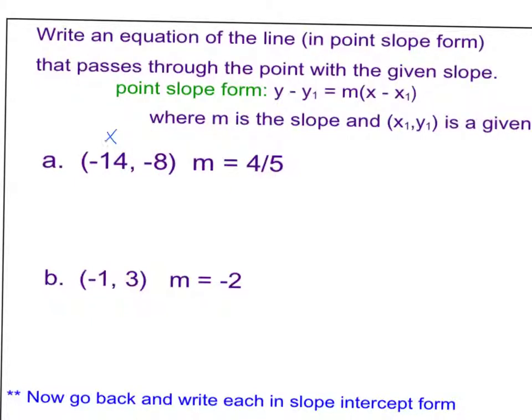Negative 14 is our x sub 1, negative 8 is our y sub 1. So y minus y sub 1, which is a negative 8, so I'm going to change that to plus 8, equals my slope, which is 4 fifths, times x minus a negative 14, minus a negative 14 is plus 14. And I'm done.